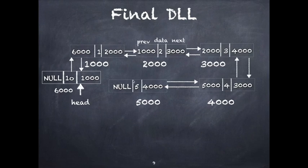The final DLL when printed will be 10, 1, 2, 3, 4, 5. What is the time complexity of this operation? All are constant time operations — you are not traversing the linked list, only doing pointer reassignments — so this takes O(1).